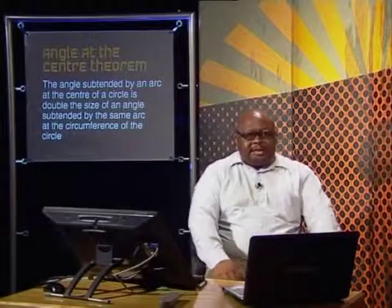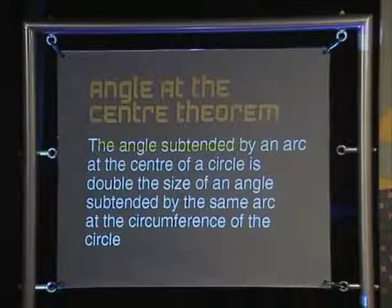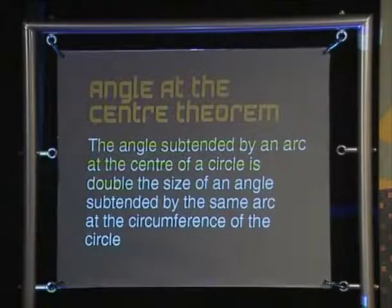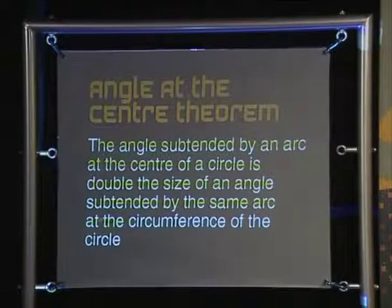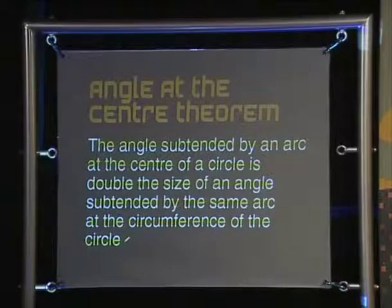Let's join John and Kanya as they introduce our next theorem. This is what the theorem states: the angle subtended by an arc at the center of a circle is double the size of an angle subtended by the same arc at the circumference. We can call this the angle at the center theorem. Let's work through this statement carefully to work out what it actually proves.